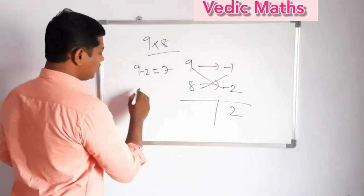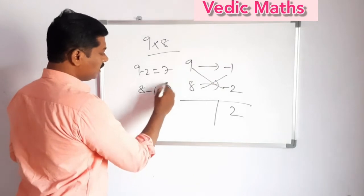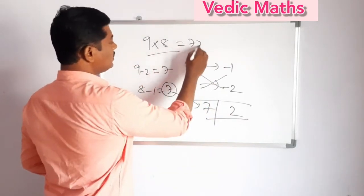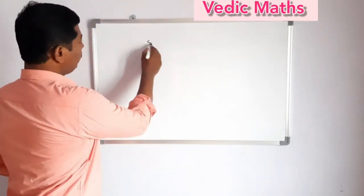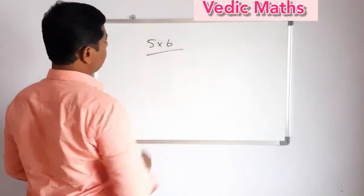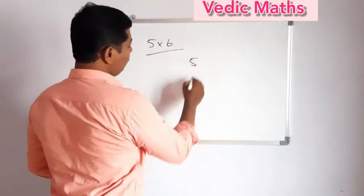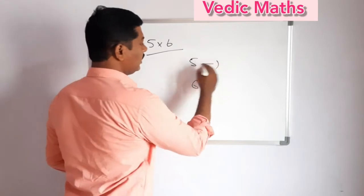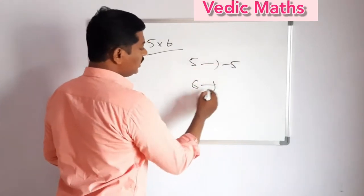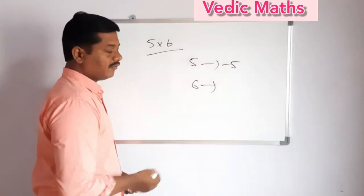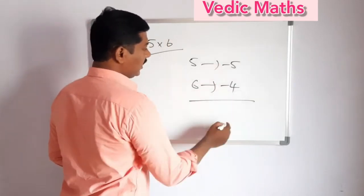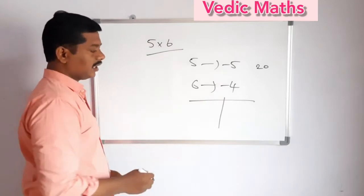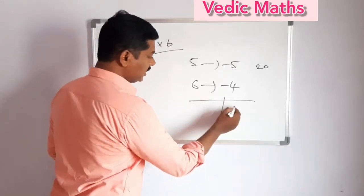7, 8 minus 1 is 7. So 5, 6, and 5 to 10 difference, 5 minus 5 equals, so minus 4 equals, so 5, 4 equals.